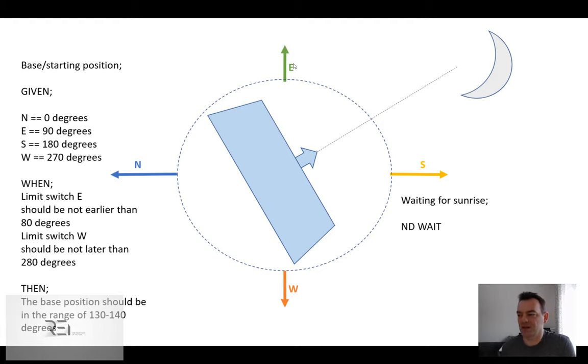90 is east, 180 is south, and west side is 270. What does it mean? You can imagine that you could just set the limit switches here and here from east to west, but I think it's too much.